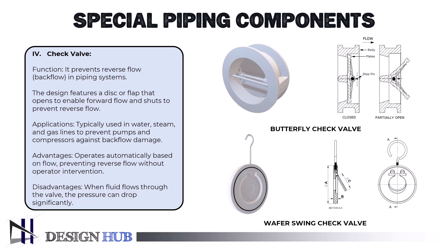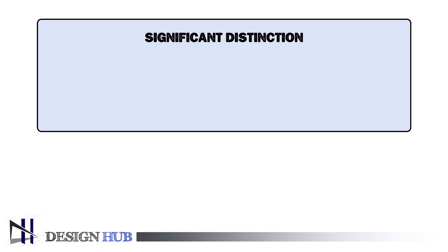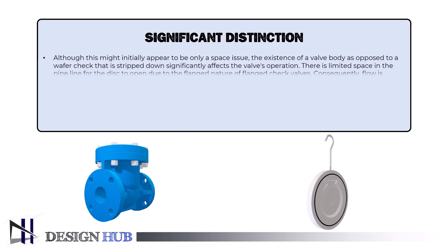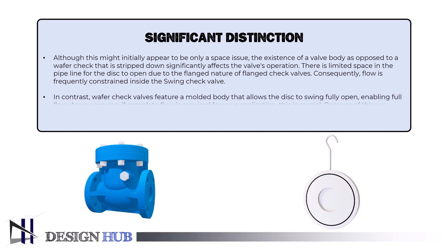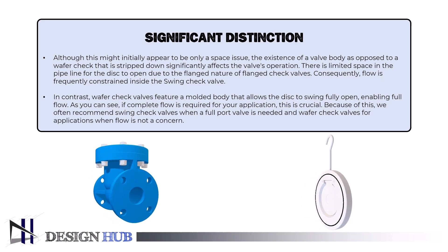Wafer check valves regulate flow via a swinging disc. Due to their compact shape, they can be installed in locations that are too small for flanged check valves to function. The disc opening region of wafer check valves is surrounded by molded bodies. The most significant distinction is that flanged check valves have limited space in the pipeline for the disc to open, frequently constraining flow, whereas wafer check valves feature a molded body that allows the disc to swing fully open, enabling full flow.